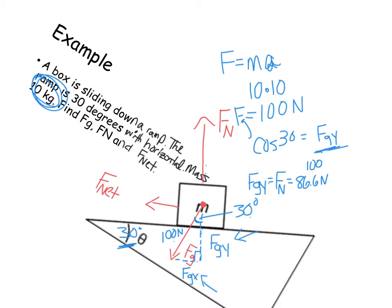And then we're going to use sine to find our X value. So sine of 30 equals our F G X over our hypotenuse. So now we have sine 30 and then times our 100. So we get our F G X, which is equal to our F net to be 50 Newtons.